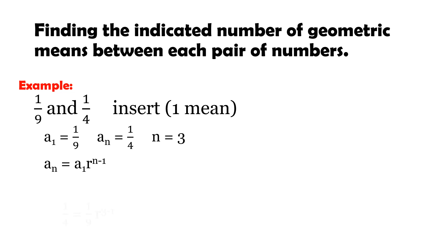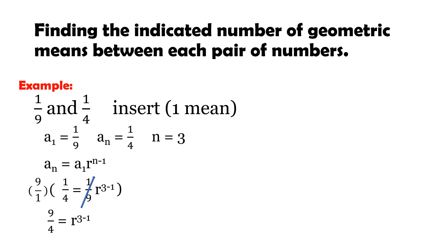Using the geometric sequence formula and substituting: a-sub-n = 1/4, a-sub-1 = 1/9, and n = 3. To cancel the 1/9, we multiply everything by its reciprocal, which is 9/1. So 9 × (1/4) = 9/4. This gives r^(3−1) = 9/4, and since 3 − 1 = 2, we have r² = 9/4.